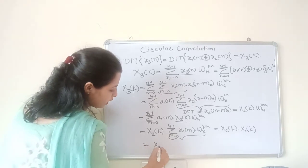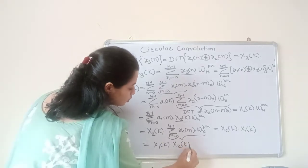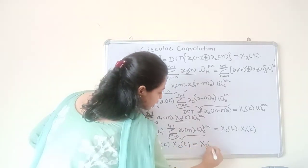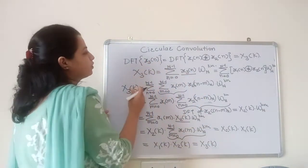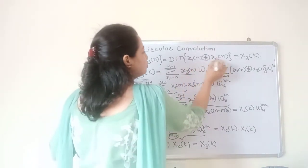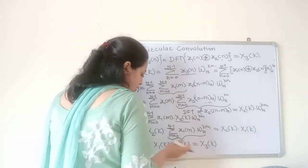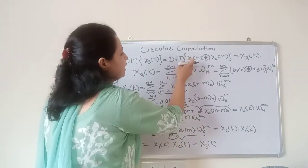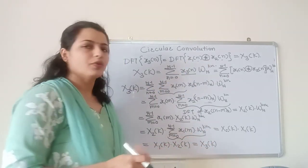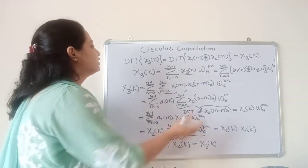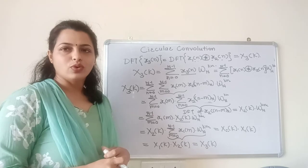So this equals X1 of k into X2 of k. Hence it is proved that X3 of k, the DFT of x3 of n which is the circular convolution of the two sequences, is equal to the multiplication of their individual DFTs. So individual DFTs are multiplied in the frequency domain when there is a circular convolution in the time domain for x1 of n and x2 of n.